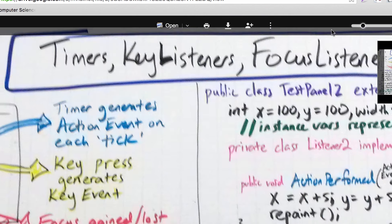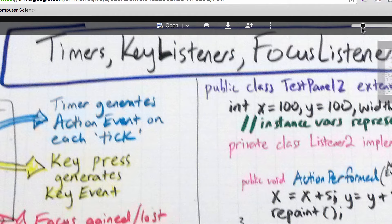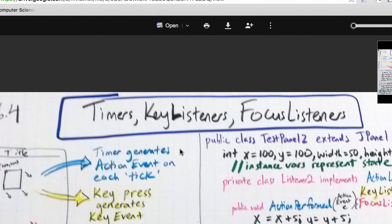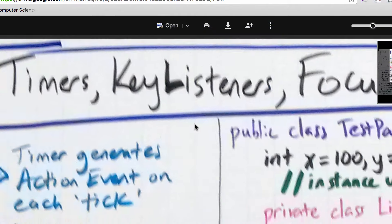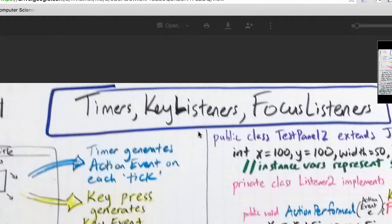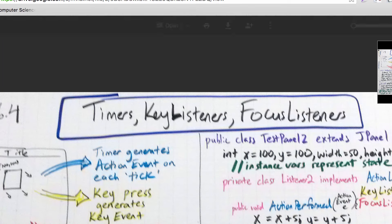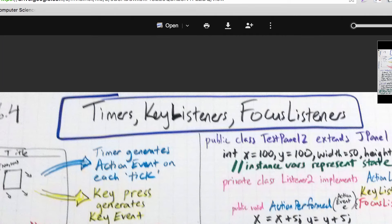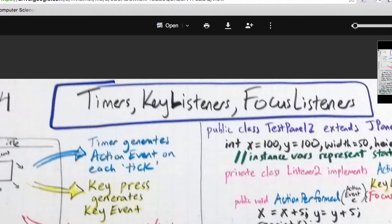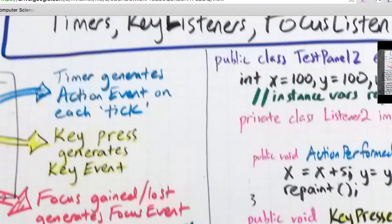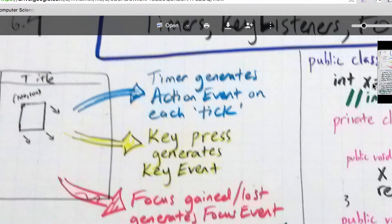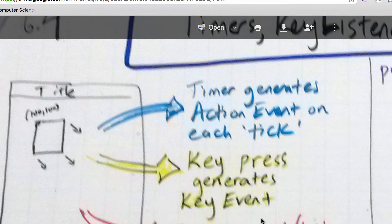Here is the short version again: timers generate action events, key presses generate key events, and focus gain/loss generates focus events.